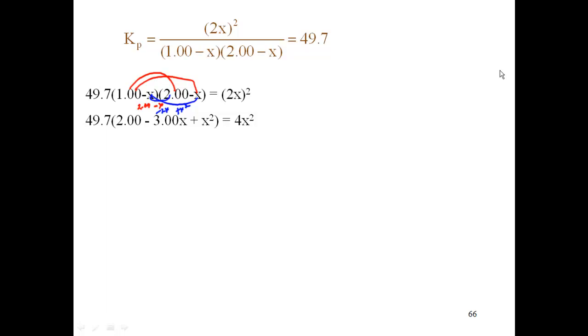So I end up with the 1 times 2, which is 2, and minus X and minus 2X, which is minus 3X, and minus X times minus X, which is X².